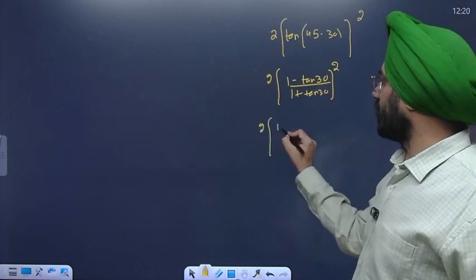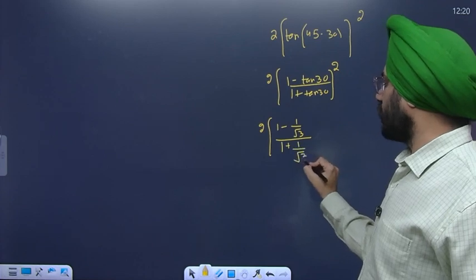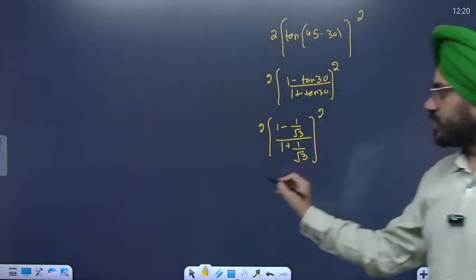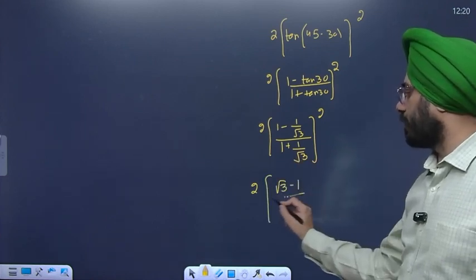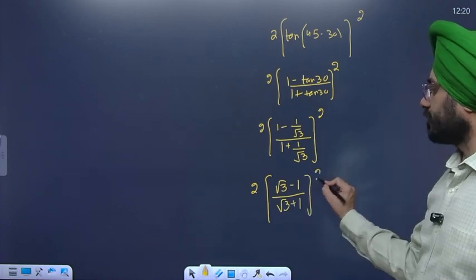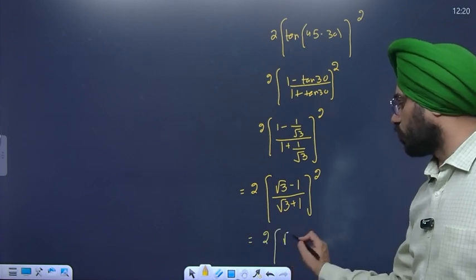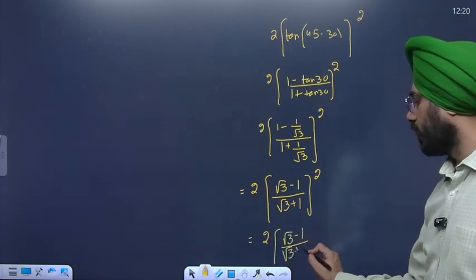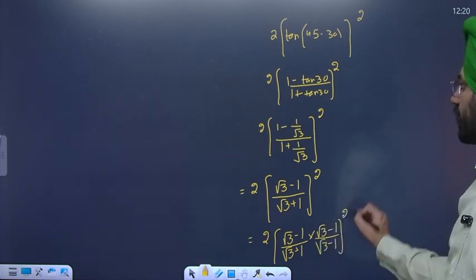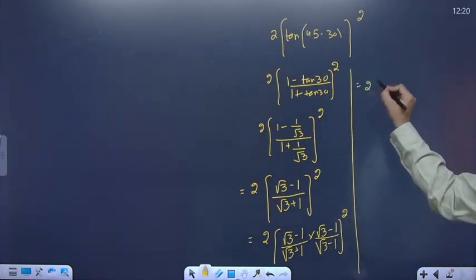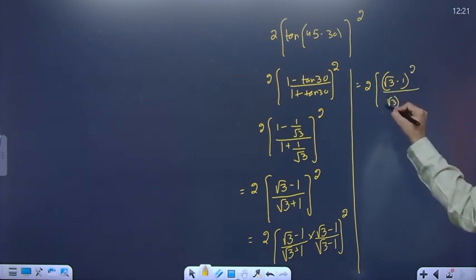tan30 ki value aayegi 1/root3. So the expression becomes: 2·[(1 - 1/√3)/(1 + 1/√3)]². Simplifying: 2·[(√3 - 1)/(√3 + 1)]². Ise aap simplify karoge to (√3-1)/(√3+1) whole square milega.